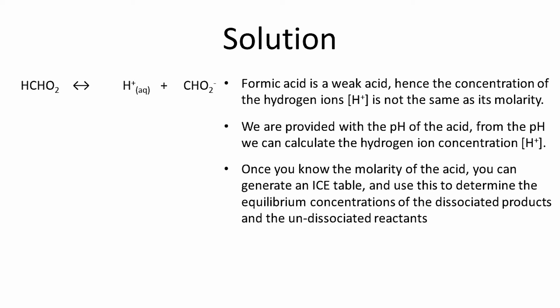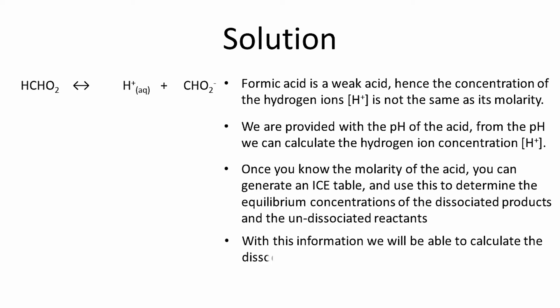Once you know the molarity of the hydrogen ions and the initial concentration, we will be able to calculate the number of moles of dissociated and undissociated reactants and products. With this information we will be able to calculate the dissociation constant Ka for formic acid.